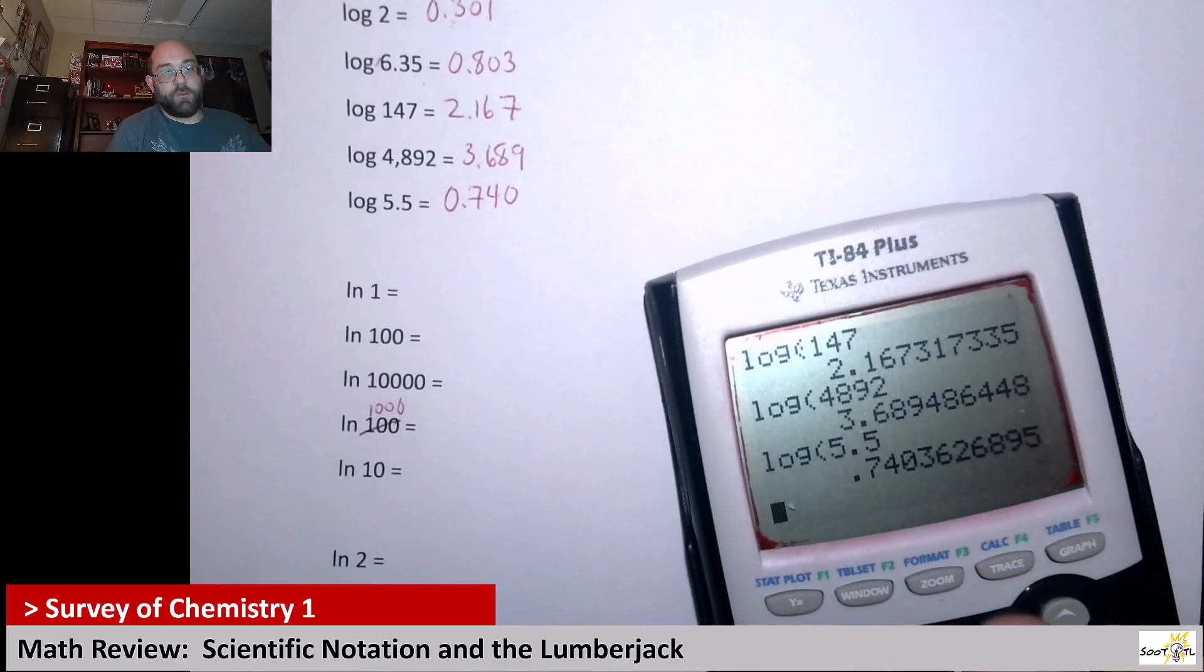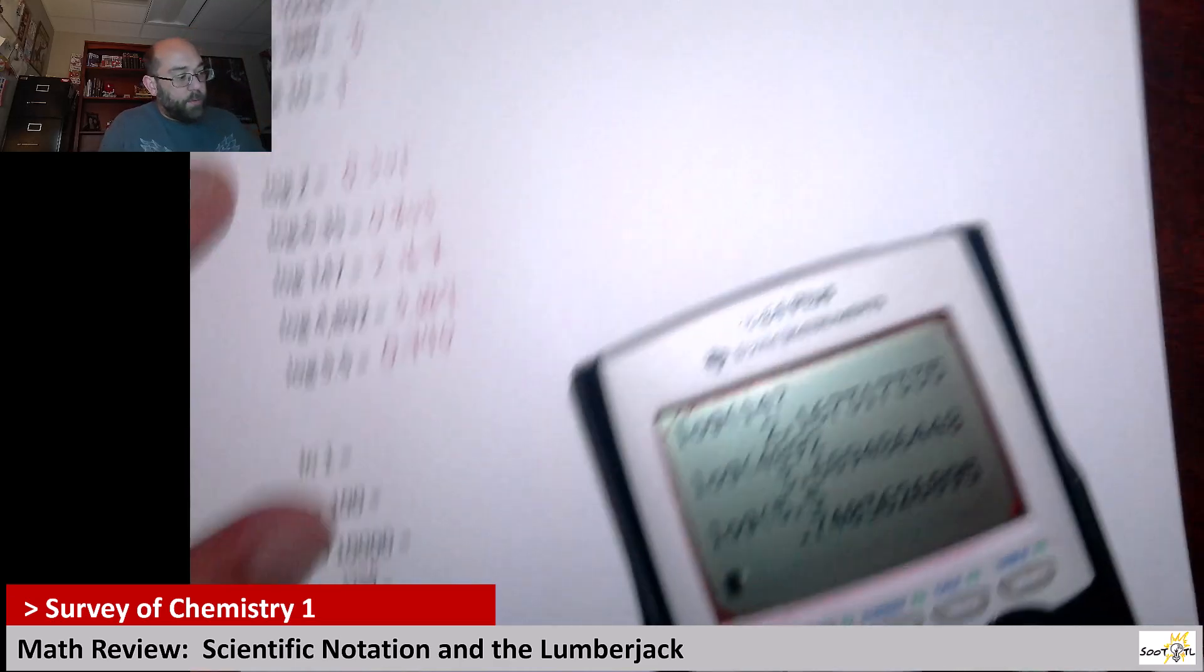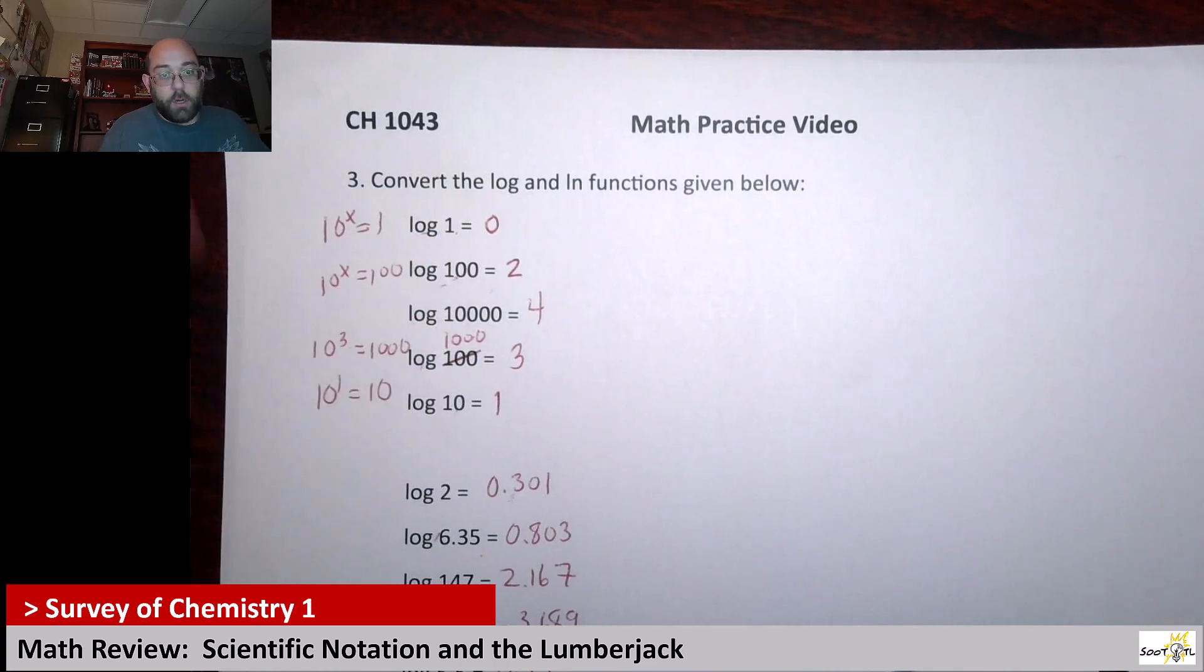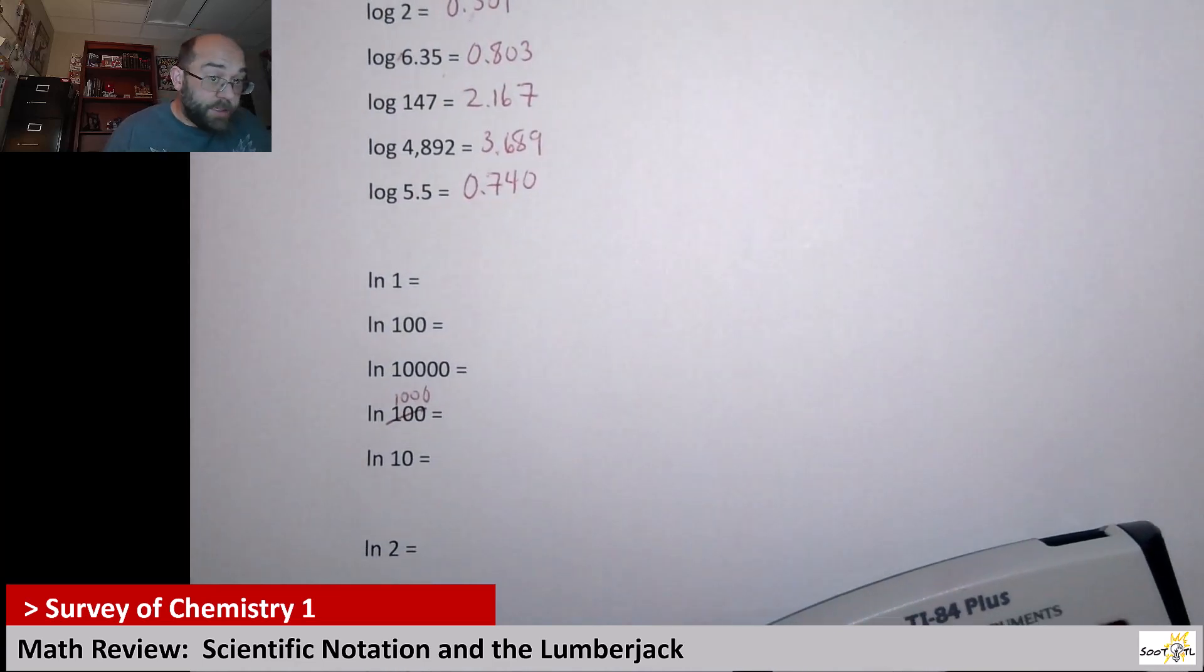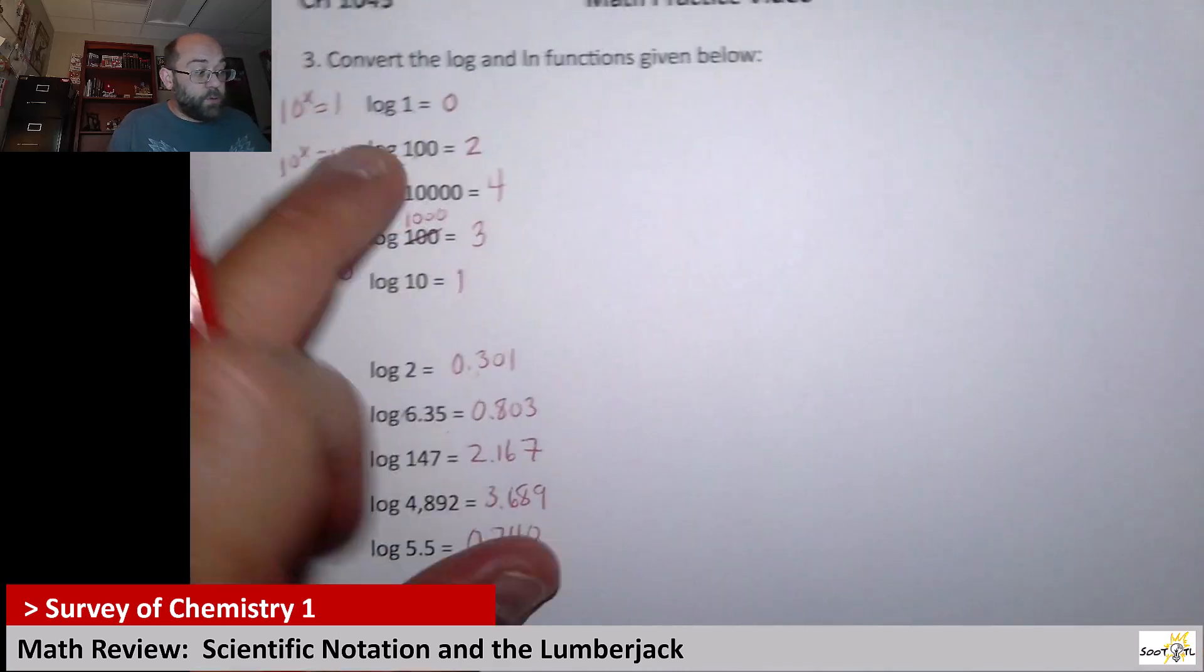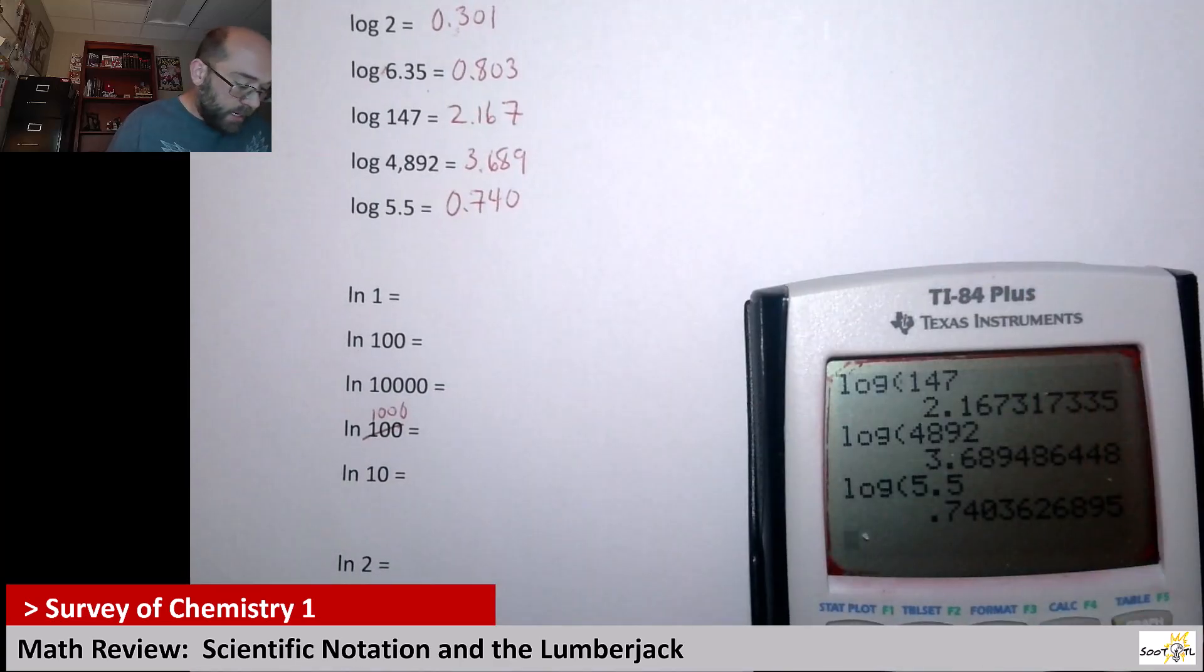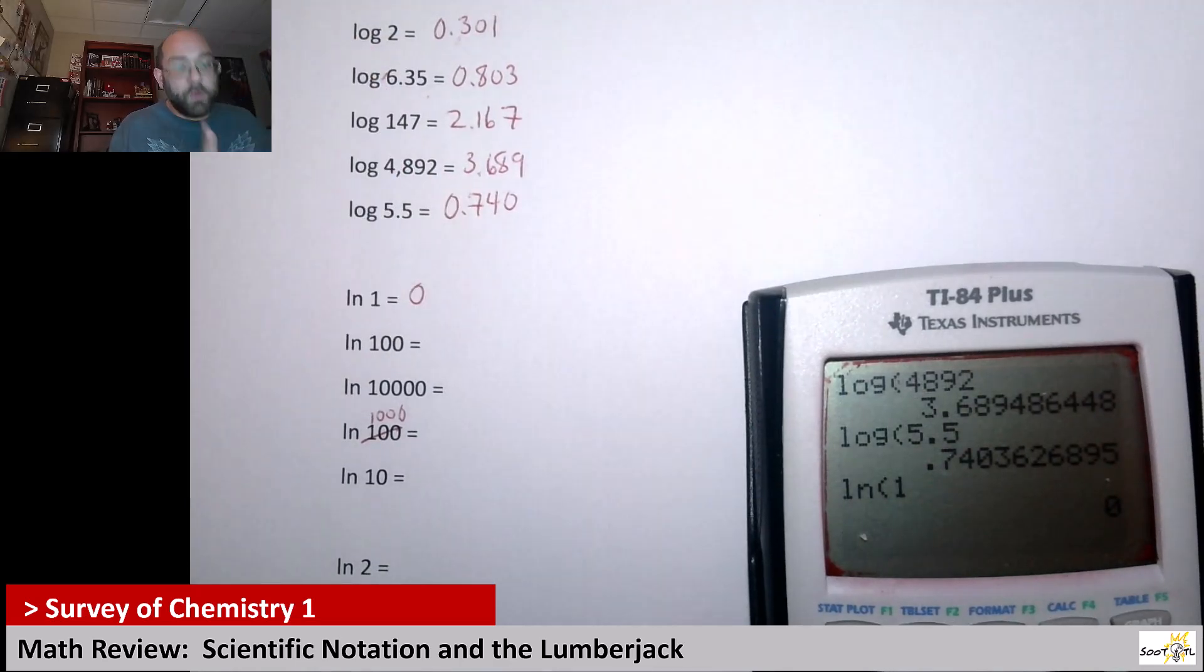Next up we have our natural log stuff. Now, what I did was I chose natural logs that were very similar to the logs. So here it was log of 1, log of 100, log of 10,000. I did the same thing with the natural log. Because the whole point I'm trying to demonstrate here is log and natural log are different. So remember, natural log of 1 was 0. And ironically, let's see. Natural log of 1 here is also 0.